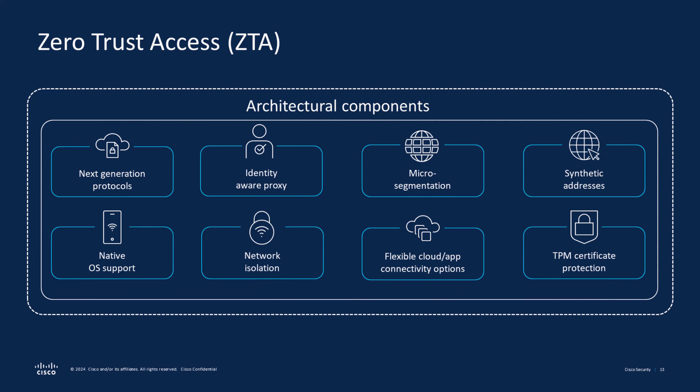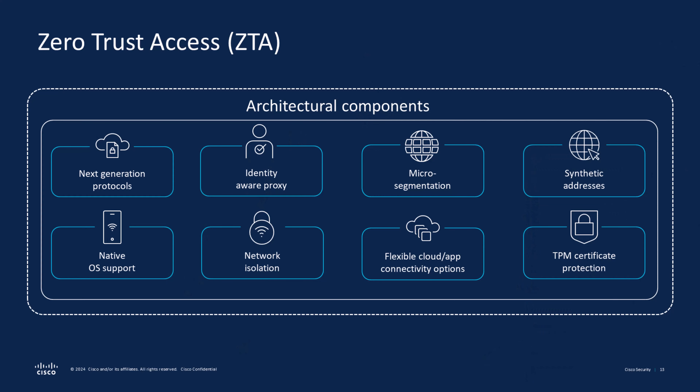Let's recap the architectural components of ZTA. You have the next-generation protocol — the Mask and Quick protocol. In addition, you have the identity-aware proxy, which helps map the end user and posture the device to the streamed application or resource it needs. You also have micro-segmentation, based upon not only an individual endpoint but per application and per process. The concept of synthetic IP addresses allows the enterprise to hide its application's IP addresses from the actual end user.